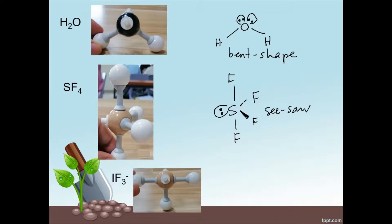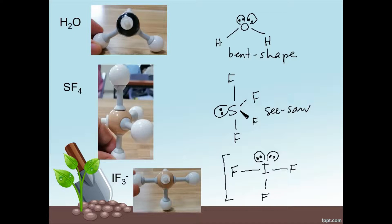What about IF3-? Iodine is the central atom. It has two lone pairs on top, so we draw those first. Then there are three single lines on the plane in front of you connected to F. Since it is an ion, don't forget to draw the square bracket with its charge.